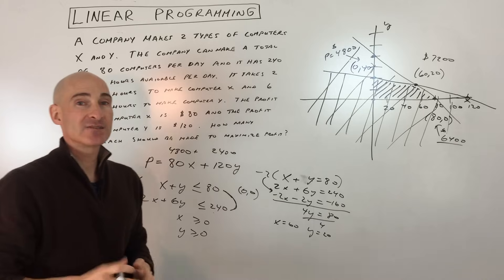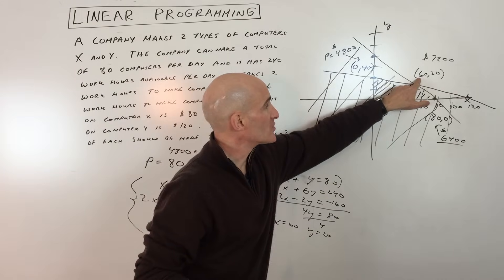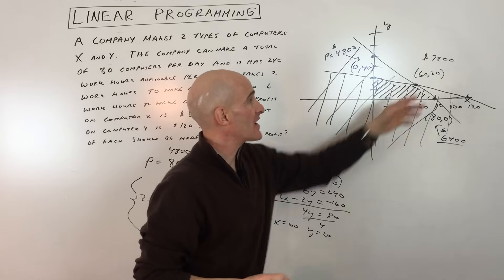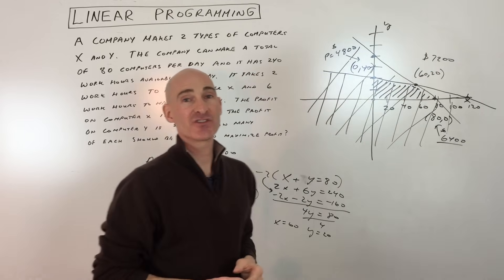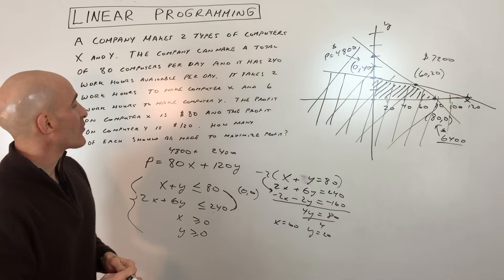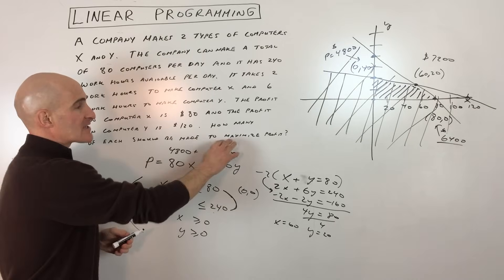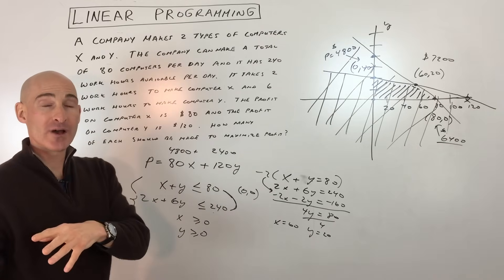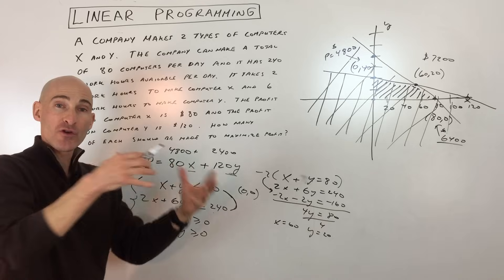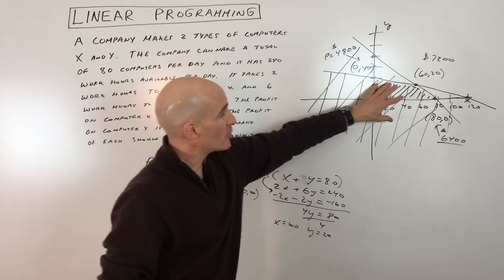To maximize profit while staying within all constraints, we should produce 60 of computer X and 20 of computer Y, giving a maximum profit of $7,200. A lot of work goes into linear programming problems, but the key is: read through quickly, identify what you're maximizing or minimizing from the last sentence, write that equation first to identify your variables, then write the constraint equations in terms of those variables.